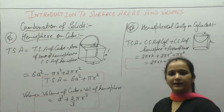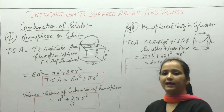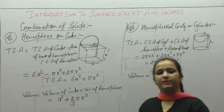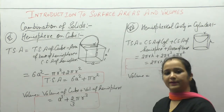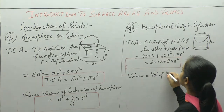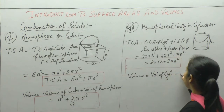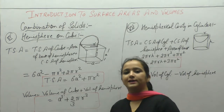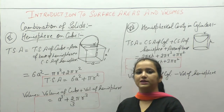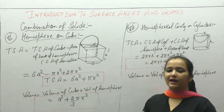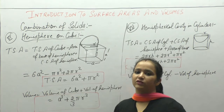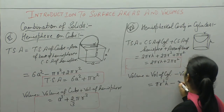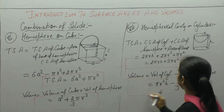When we have a cavity in any solid, a portion has been removed, so the volume decreases. Only in the cavity case, volume is minus. Otherwise, in all cases we have added. So volume = volume of cylinder − volume of hemisphere. Area is always added whether you remove a cavity or not, so area uses plus. Volume of cylinder = πR²H minus volume of hemisphere = (2/3)πR³.